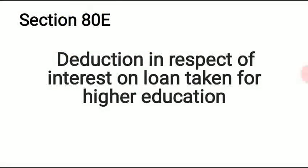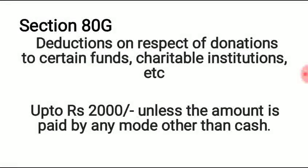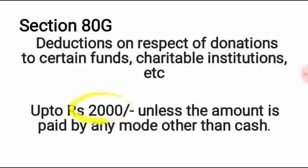Section 80E provides a deduction in respect of interest on a loan taken for higher education. Higher education means above senior secondary level, and deduction is available only on the interest portion. Section 80G provides deductions in respect of donations to certain funds or charitable institutions. If you donate to a registered institution, the deduction comes under Section 80G, but note that the limit is Rs. 2,000 if payment is made in cash.